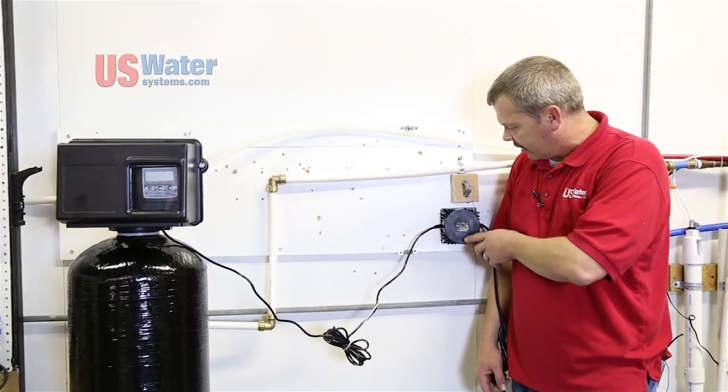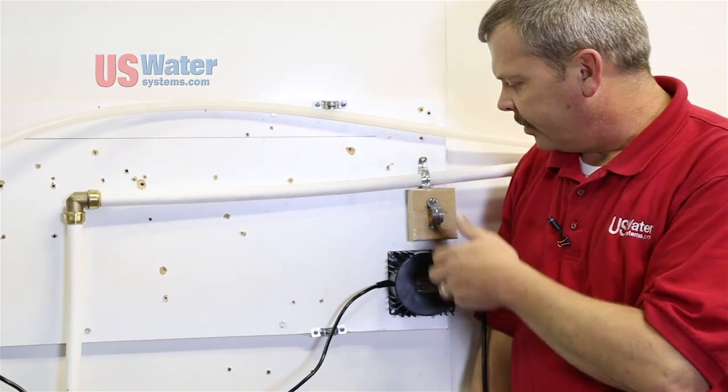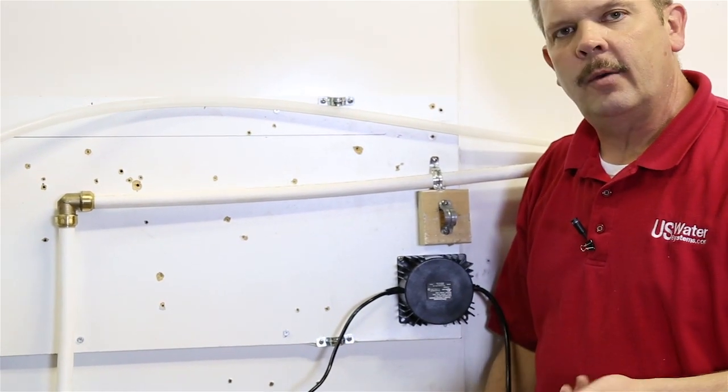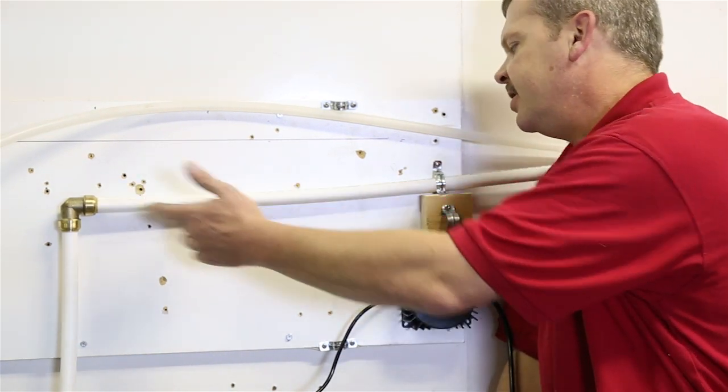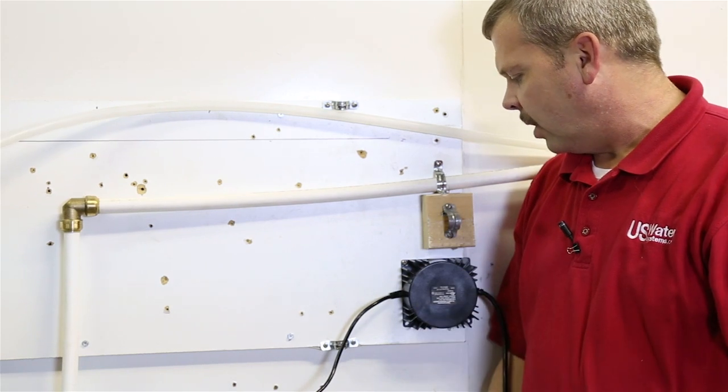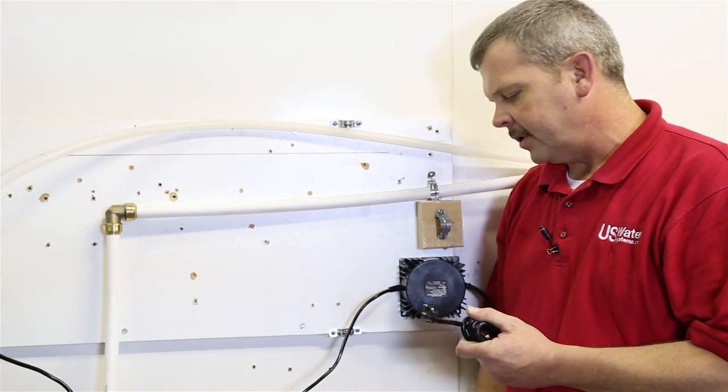As you can see, we mounted our transformer to our backing plate away from the system. Make sure you secure it to the wall. I wouldn't leave it on the floor that way if there's a leak, there's not water getting onto it. Don't put it under a joint or anything that might drip on it. Just make sure you secure it to the wall before you plug it in. That way there's no opportunity for it to get wet.